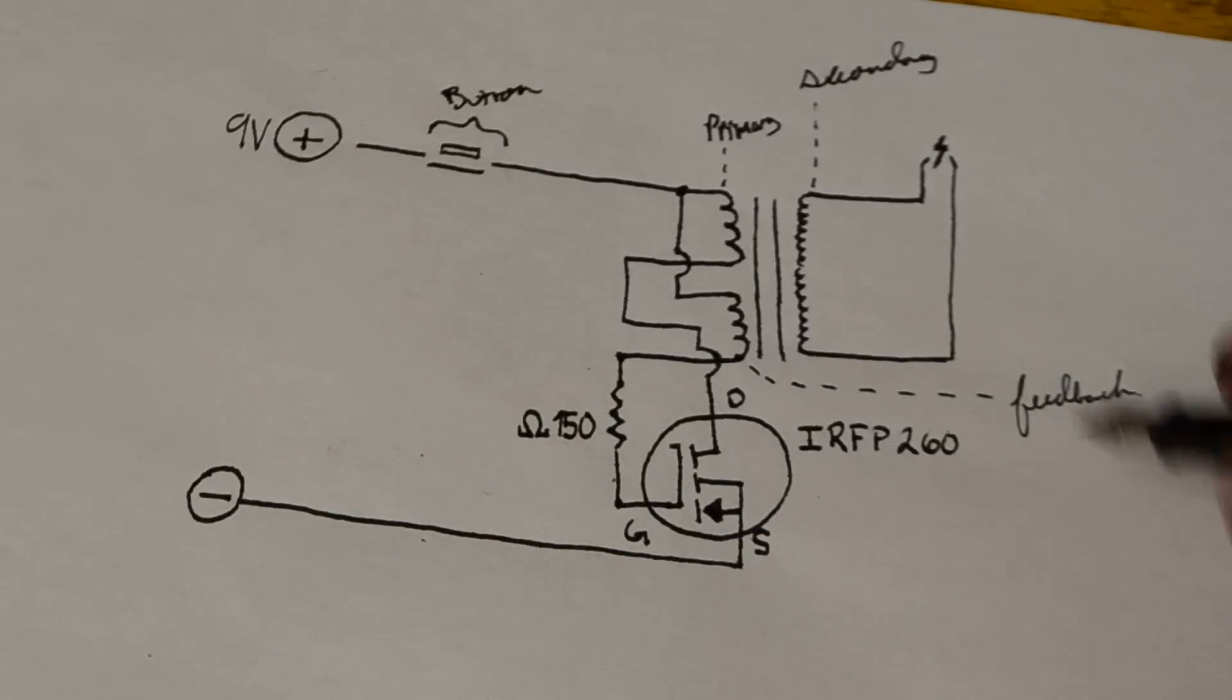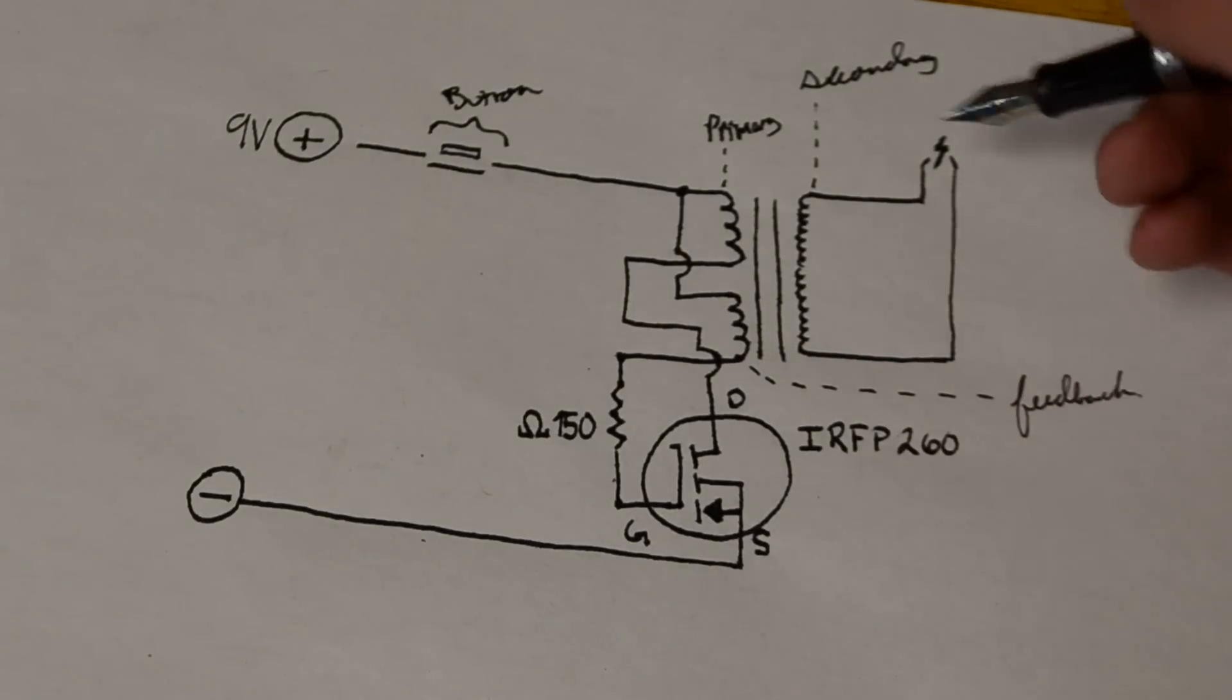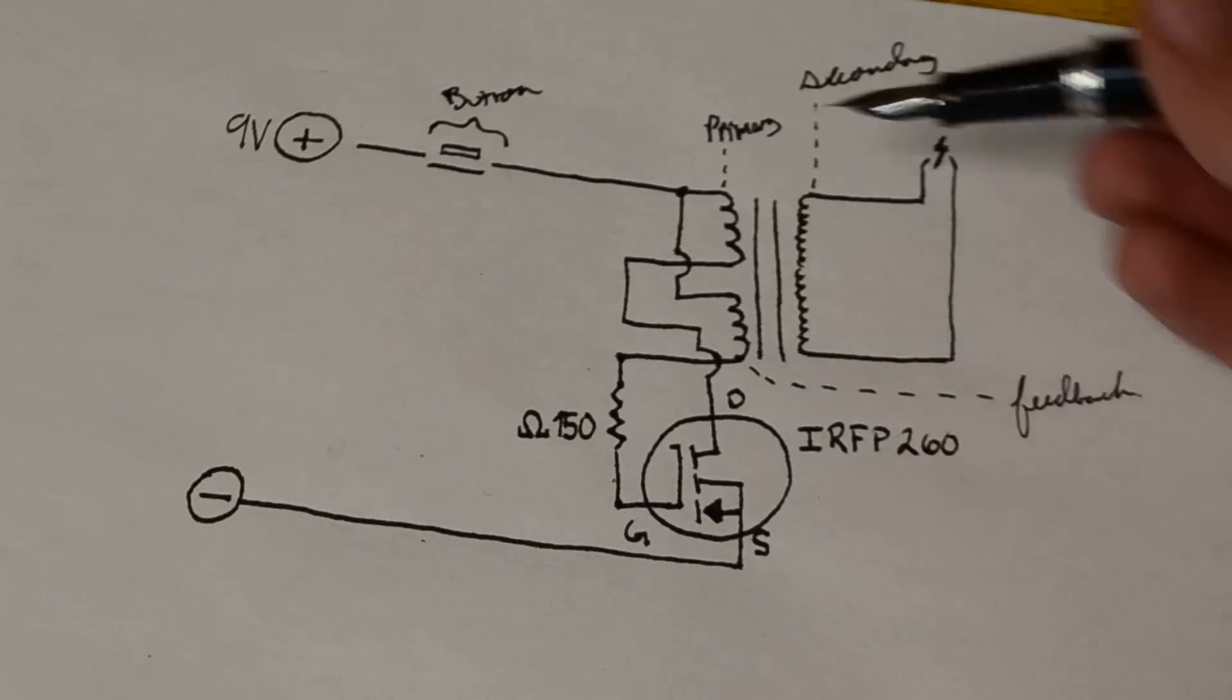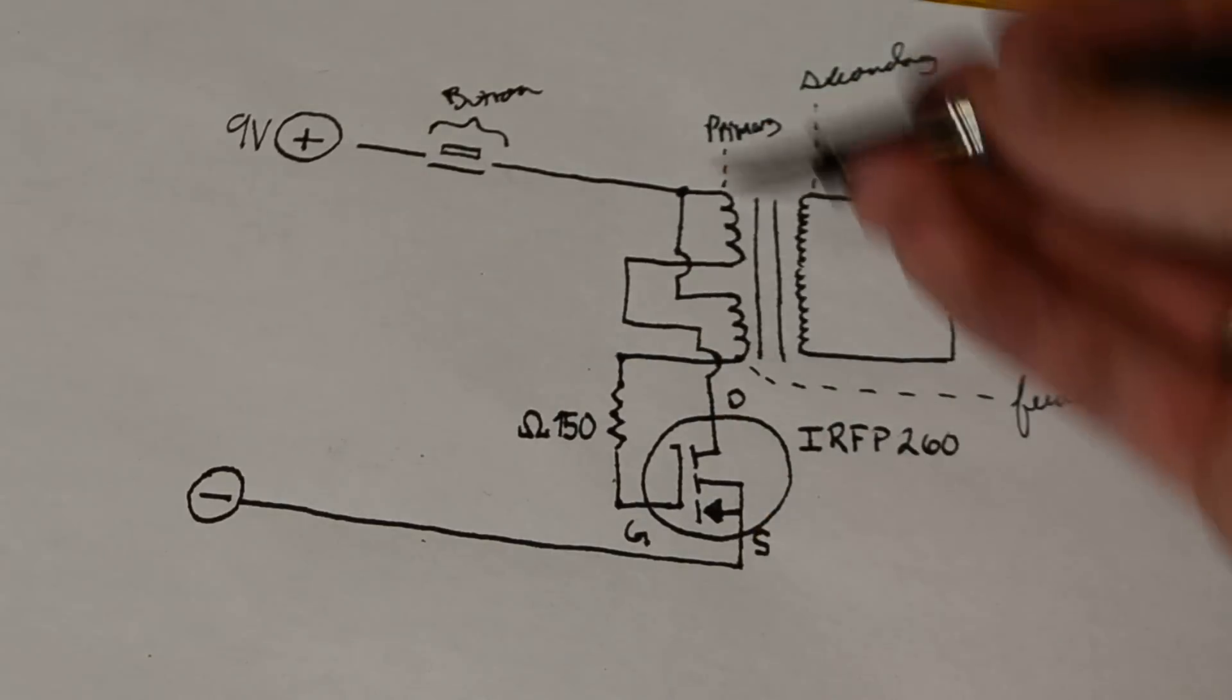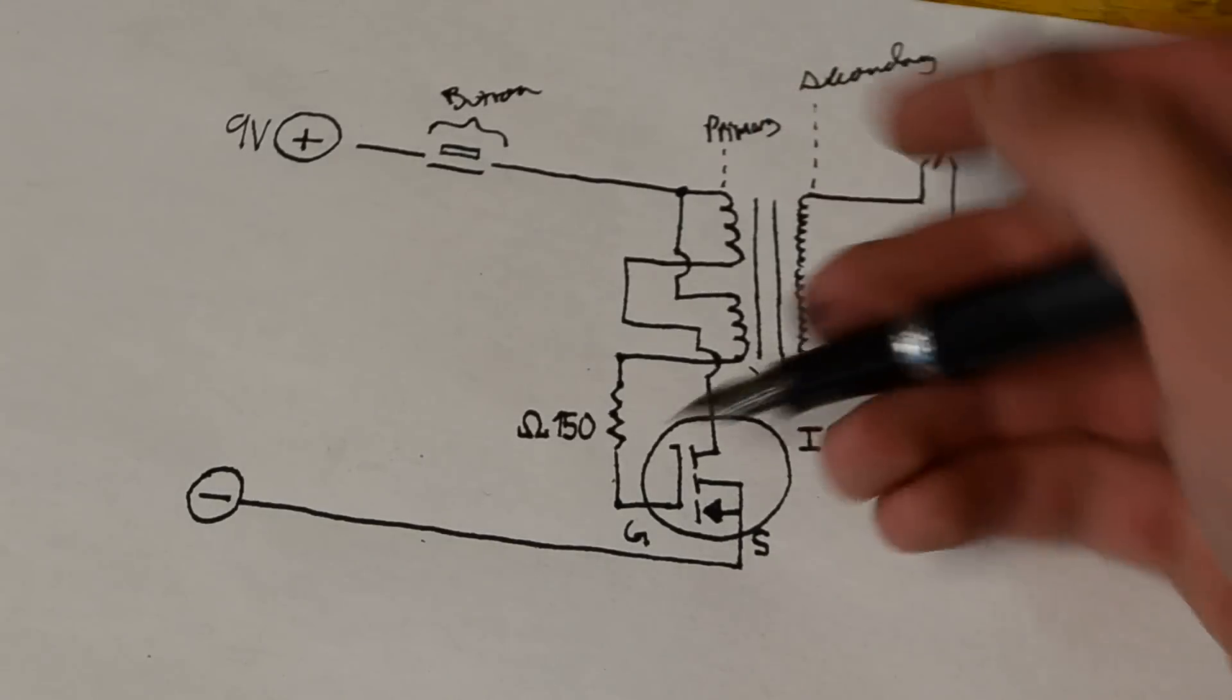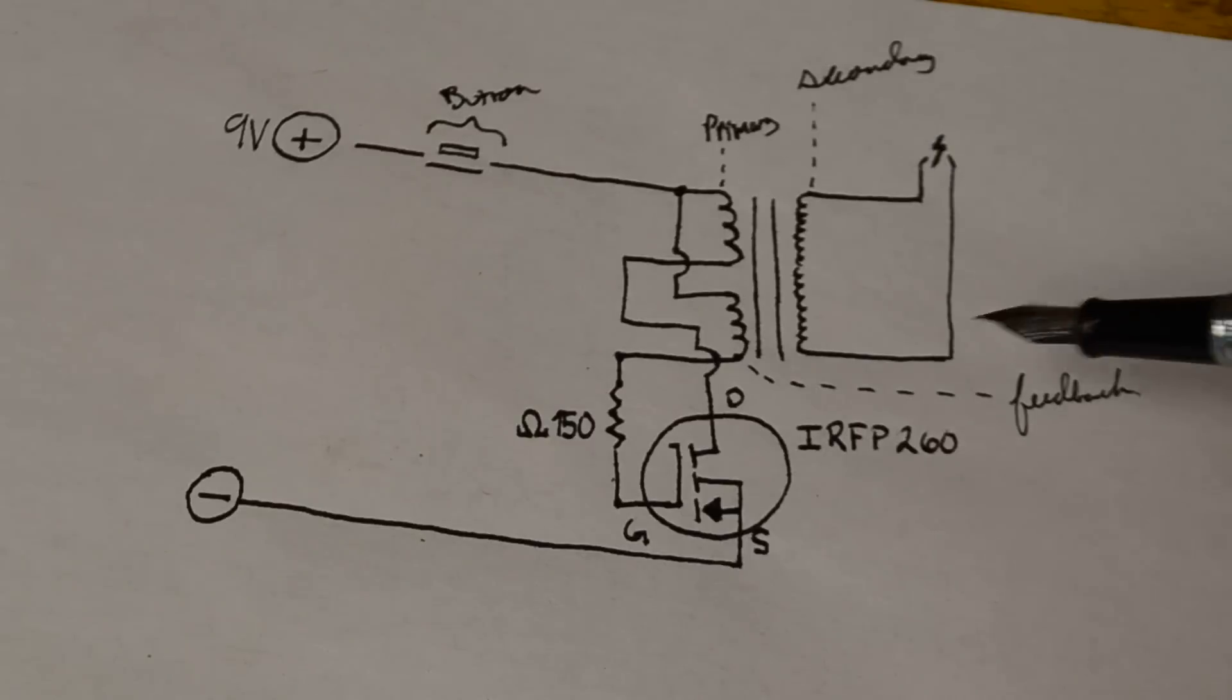However, something interesting happens here. When the primary coil gets current flowing through it, the secondary coil's magnetic field due to inductance collapses in on itself, producing the electrical spark up here. It also produces a counter field to the feedback coil. When that happens, it doesn't allow current to flow to the gate anymore, shutting off the transistor. This allows the inductors to reset themselves, producing an oscillation like a square wave, or probably a little smoother.